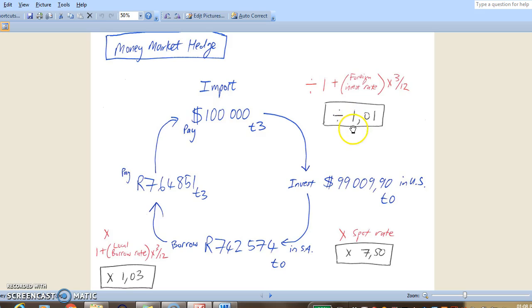We divide by 1.01. Where does 1.01 come from again? Remember it's 1 plus the foreign rate of 4% times 3 over 12. So 4 times 3 is 12 divided by 12 is 1.